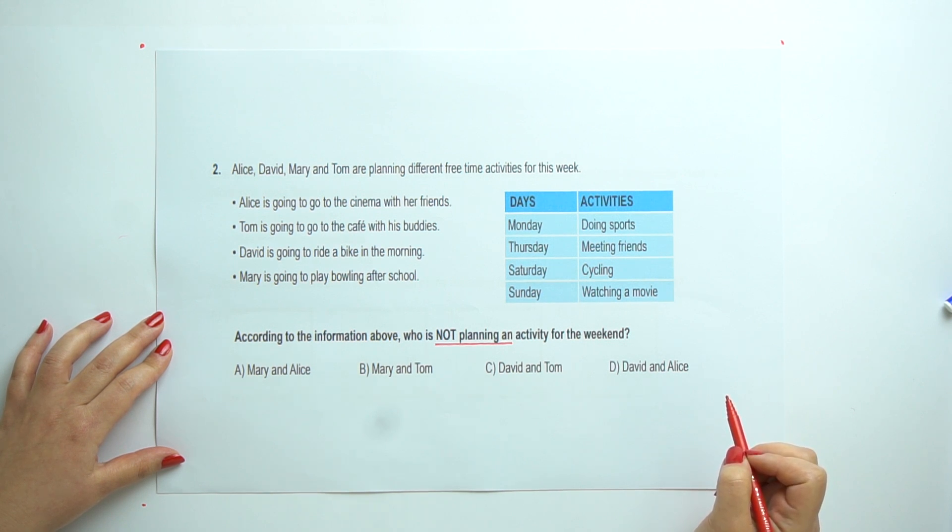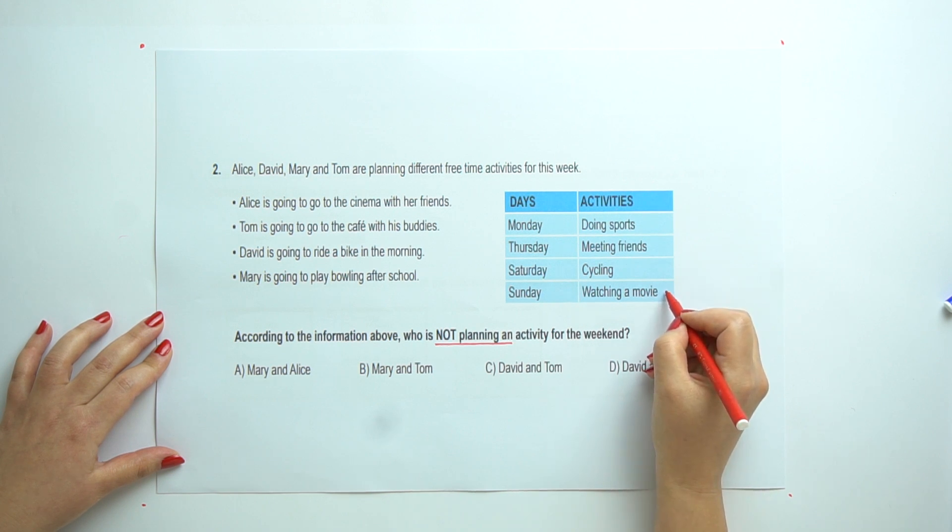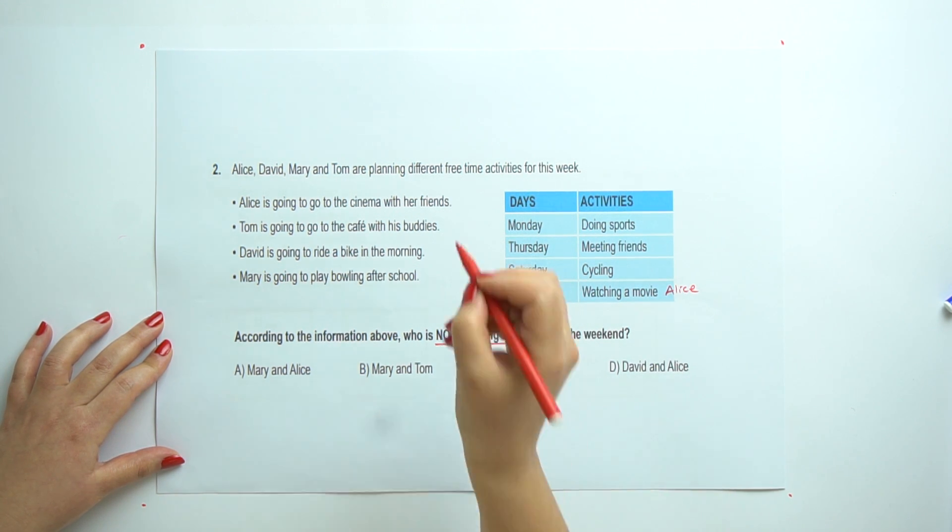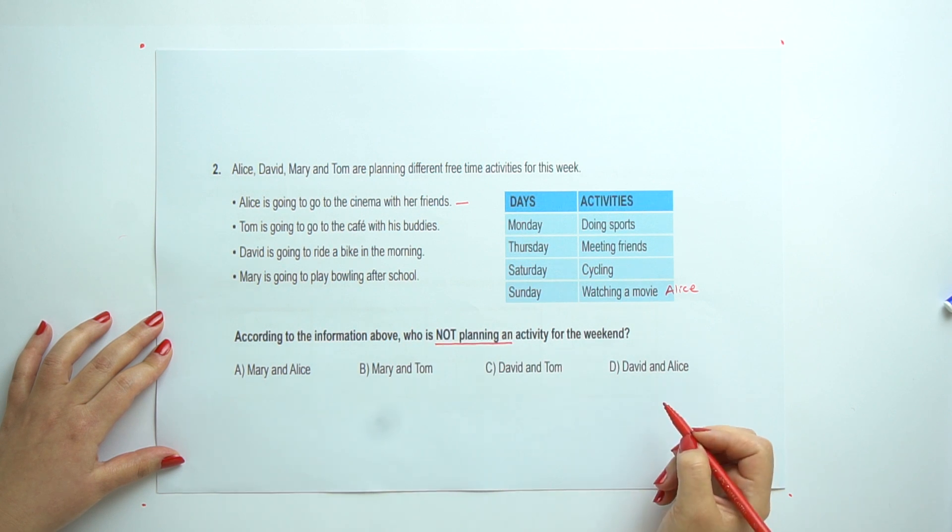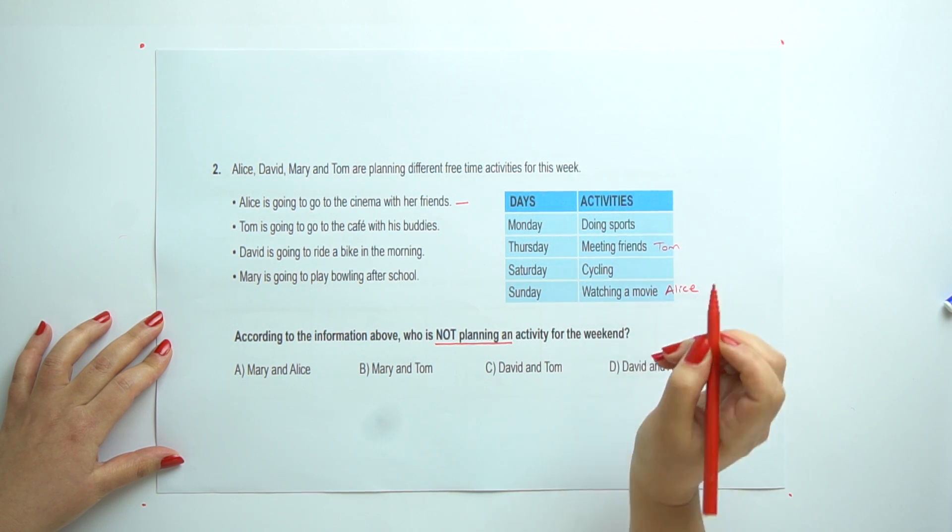Alice is going to the cinema with her friends. So, this is on Sunday. Alice. Tom is going to go to the cafe with his buddies. This is on Thursday. Tom.